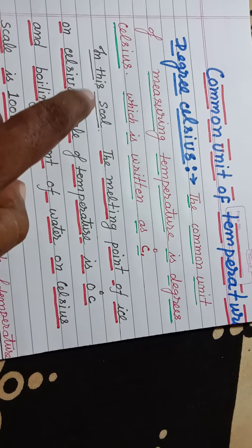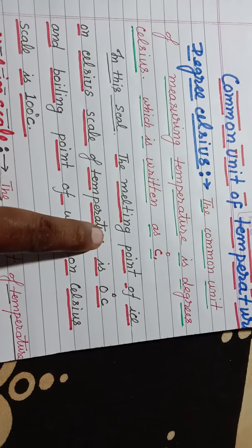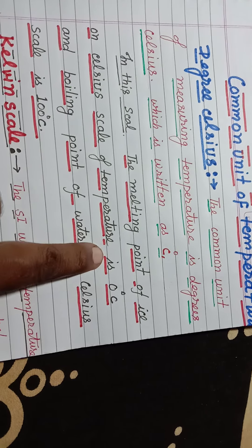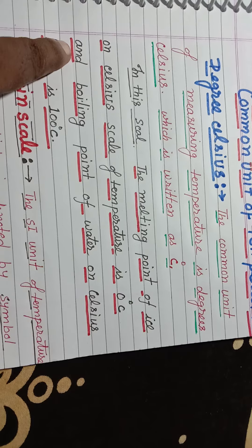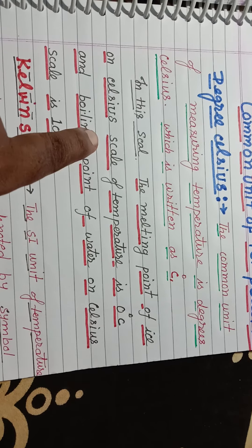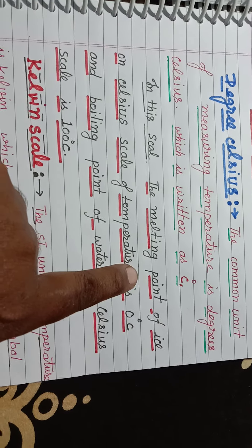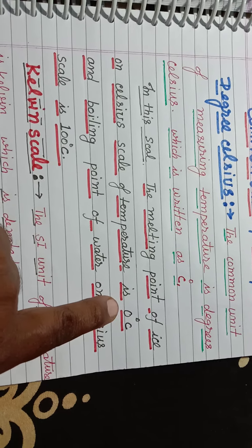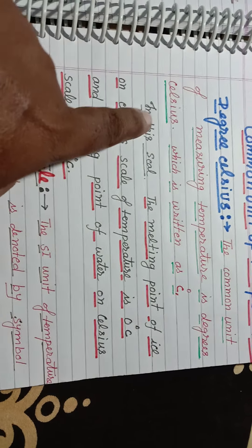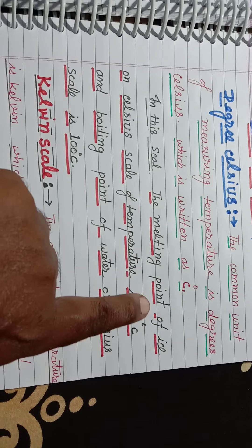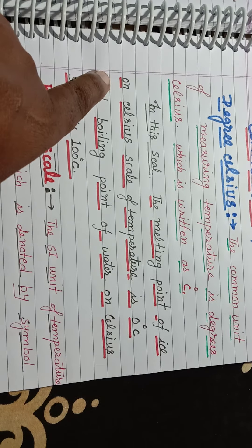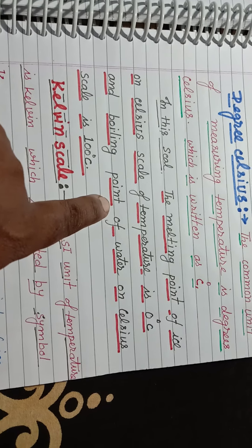On the Celsius scale, the melting point of ice is 0 degree Celsius and the boiling point of water is 100 degree Celsius. Boiling point ko 100 degree Celsius indicate kia gaya hai.